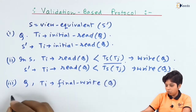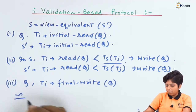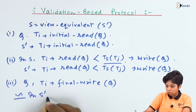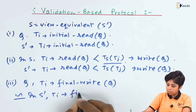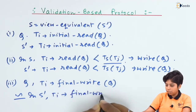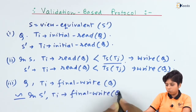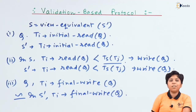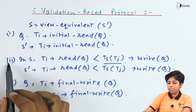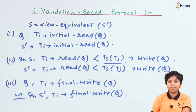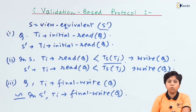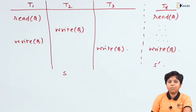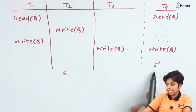The third condition is: if Ti is performing the final write on Q in schedule S, then it must also perform the final write on Q in schedule S-dash. That means if Ti performs the final write on data item Q in S, then in S-dash also Ti must produce that final write on Q. If these three conditions are achieved, then S is view equivalent to S-dash.